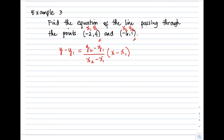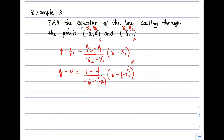Substituting into the formula: y − 4 = [(1 − 4)/(−6 − (−2))](x − (−2)). Simplifying: the numerator is 1 − 4 = −3; the denominator is −6 + 2 = −4. So we get y − 4 = (−3/−4)(x + 2).